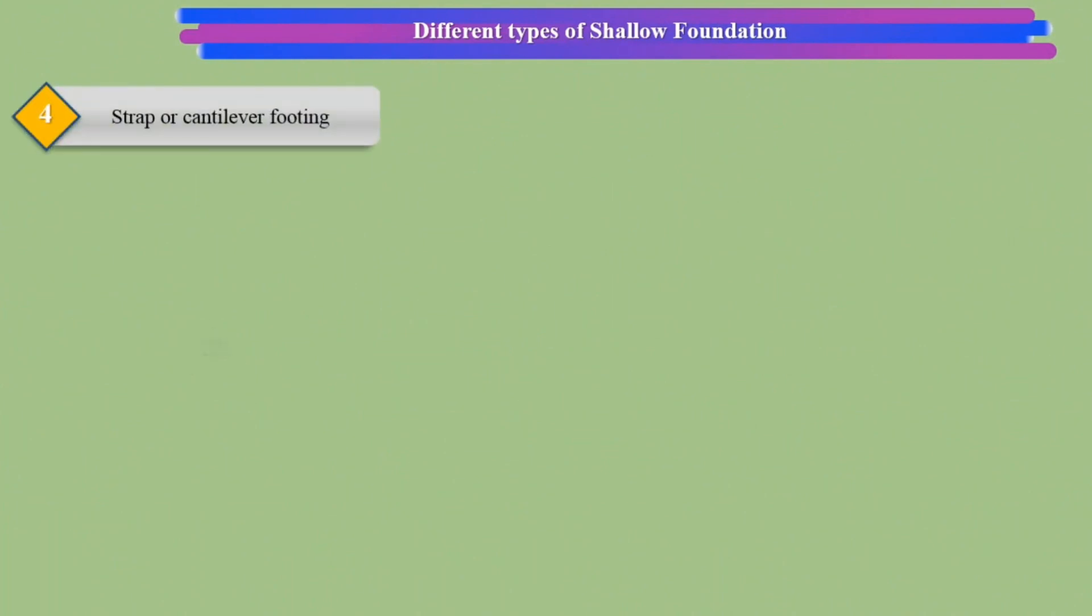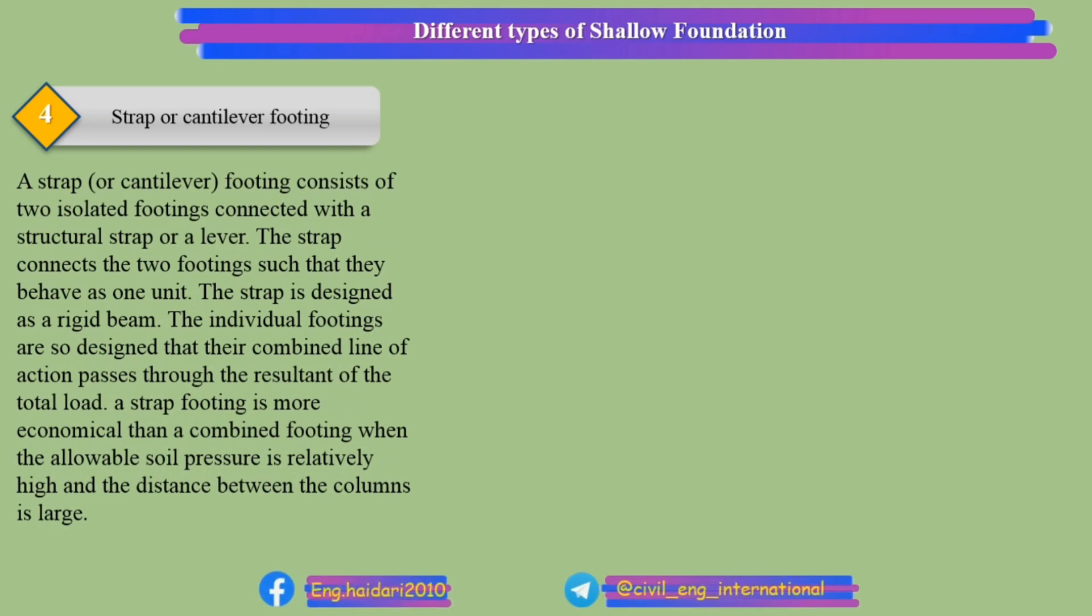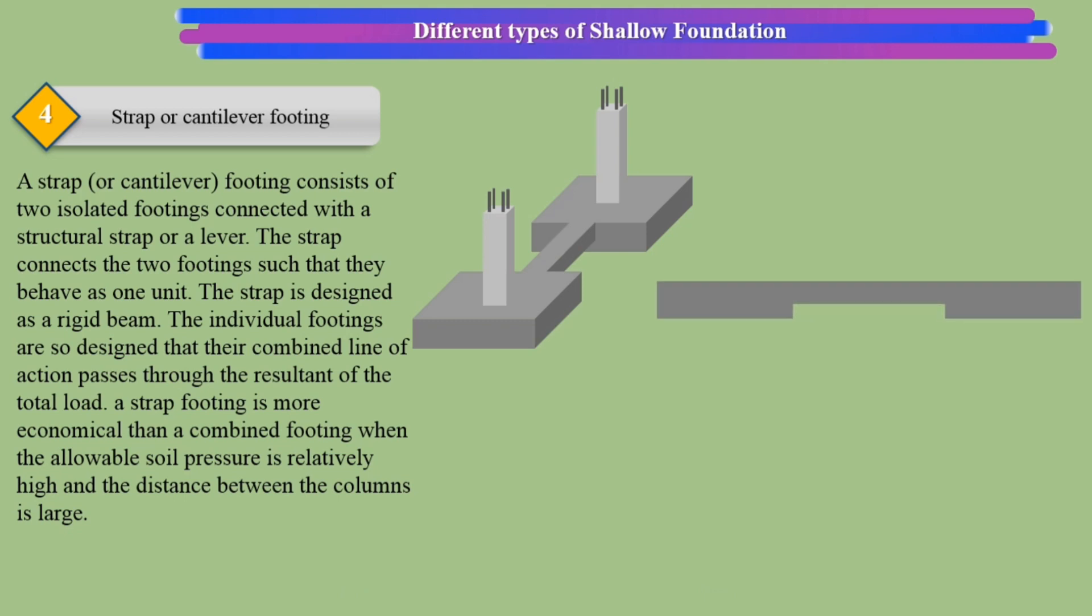Strap or cantilever footing: A strap footing consists of two isolated footings connected with a structural strap or lever. The strap connects the two footings such that they behave as one unit. The strap is designed as a rigid beam.